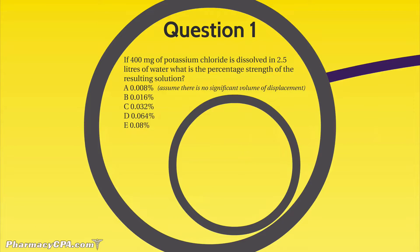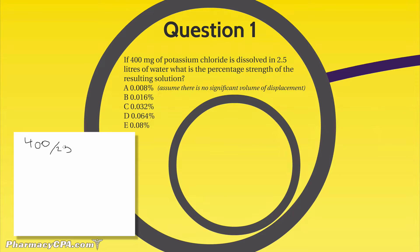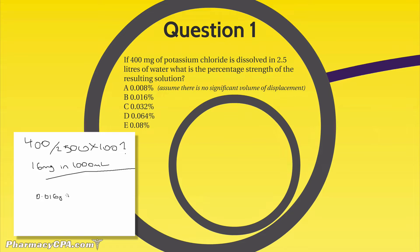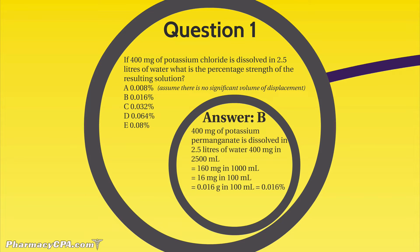Question one: if 400 milligrams of potassium chloride is dissolved in 2.5 liters of water, what is the percentage strength of the resulting solution? When I see this I'm thinking 400 milligrams in 2500 mils of water, and it's asking for a percent. Since milligrams and mils are on the same level, working it out gives you answer B, which is 0.016 percent.